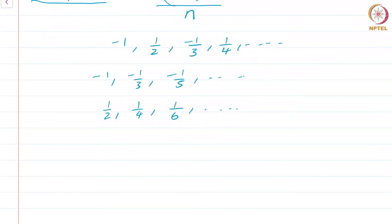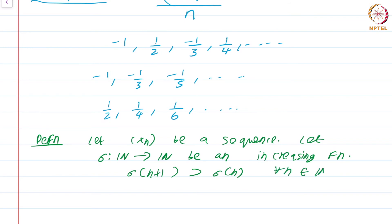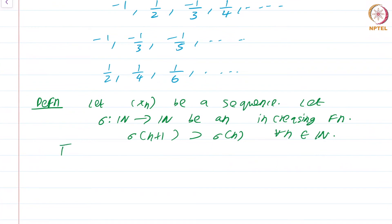This example motivates another definition. Let x_n be a sequence. Let sigma from natural numbers to itself be an increasing function. This means that sigma of n plus 1 is greater than sigma of n for all n.